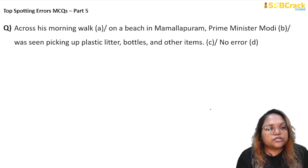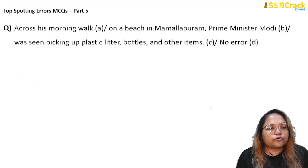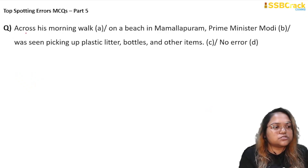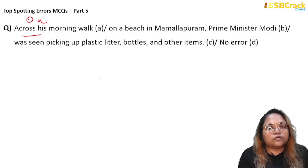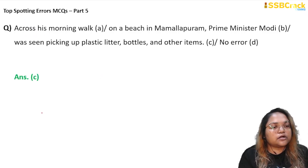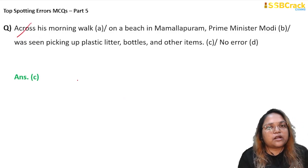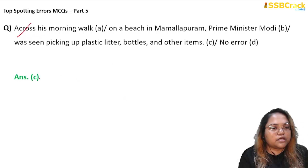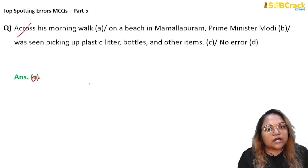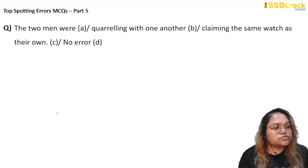Next question: 'Across his morning walk on a beach in Mamalapuram, Prime Minister Modi was seen picking up plastic litter bottles and other items.' Here 'across his morning walk' is wrong — we say 'on his morning walk.' The correct preposition is 'on,' not 'across.' So the error is in part A, and that will be our answer.